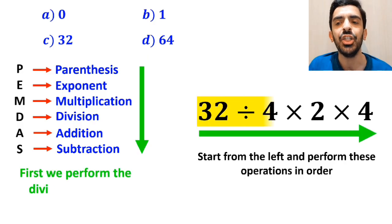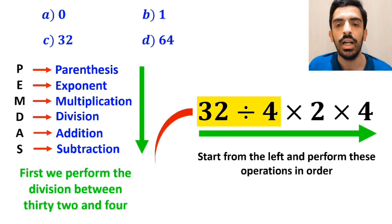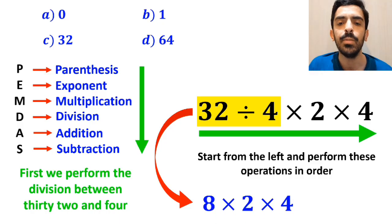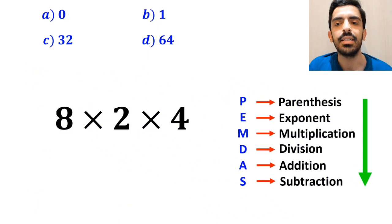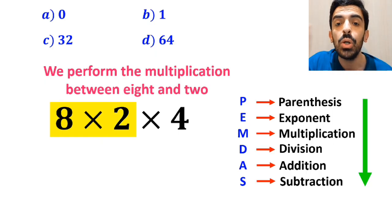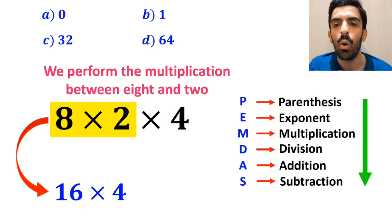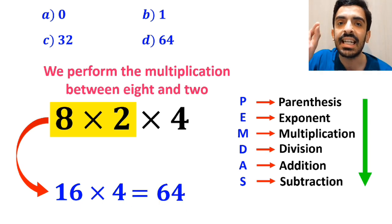So first we perform the division between 32 and 4, which simplifies this expression to 8 multiplied by 2 and again multiplied by 4. In the next step, we perform the multiplication between 8 and 2, and instead of this expression we can write 16 times 4, which finally gives the answer 64.